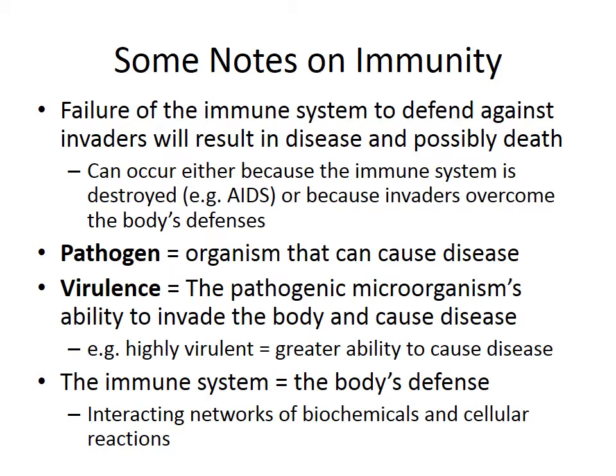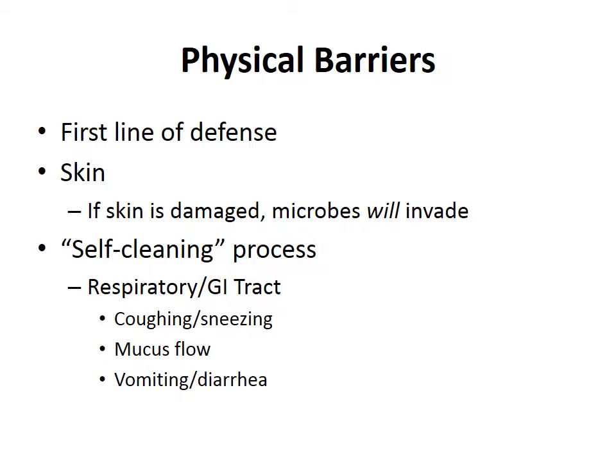A few definitions: a pathogen is any organism that can cause disease. Virulence is the pathogenic microorganism's ability to invade the body and cause disease — a highly virulent pathogen has a greater ability to cause illness. The immune system is the body's defense; it involves interacting networks of biochemicals and cellular reactions. We'll focus on the cells and how they work and respond.